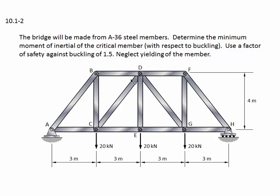One of these members is going to be the critical member in terms of buckling. It means it will be the one that buckles first. We need to find it and find what the minimum moment of inertia will need to be for that member.